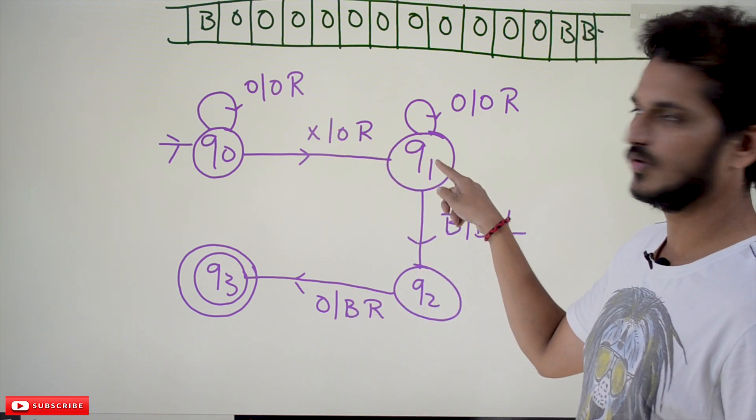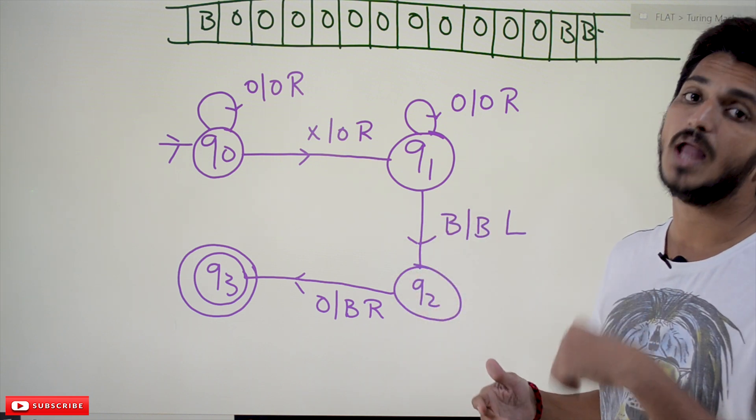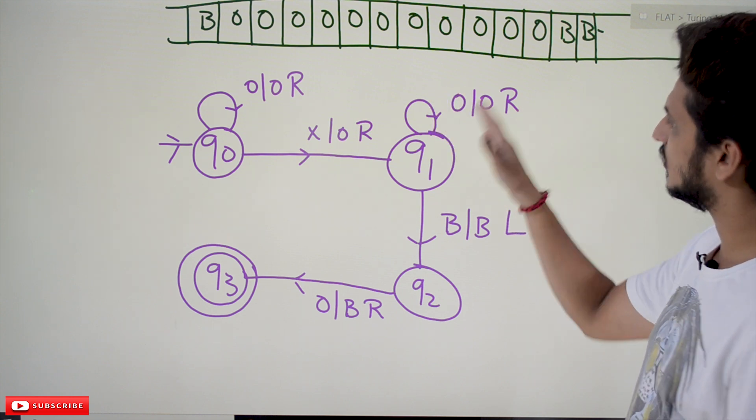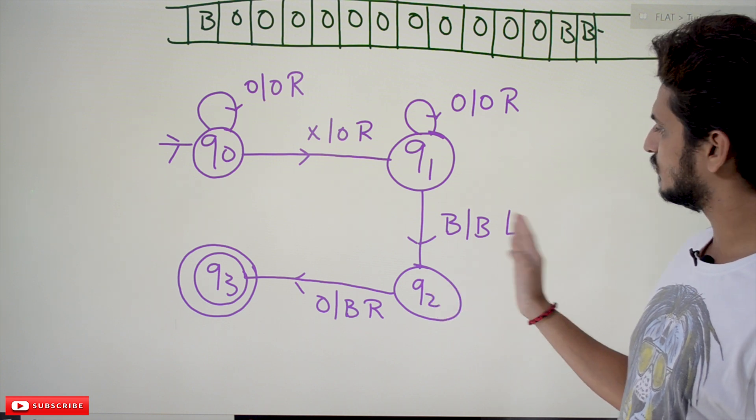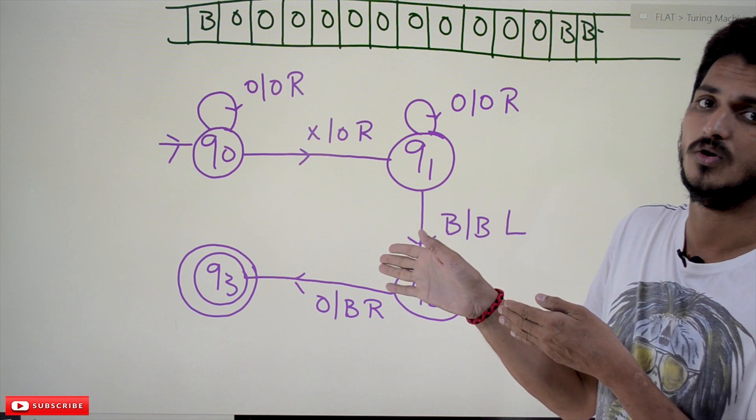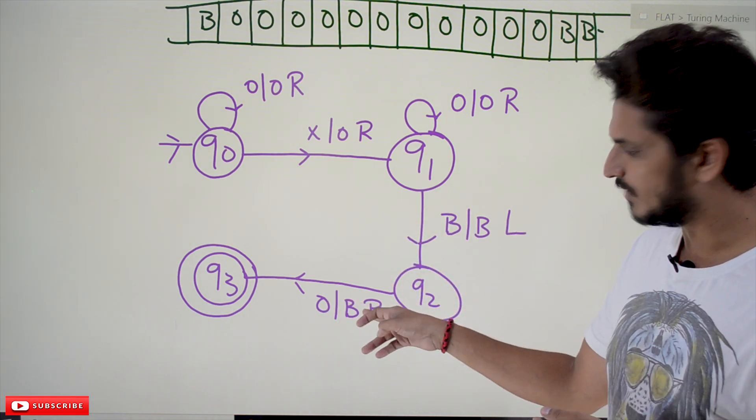Again move right until you find blank. So whenever you find zeros, keep on going right. Whenever you find blank, move to q2 state and we are moving left side. The last zero should be converted into blank. So zero to blank, moving right side, we are moving to halt state.